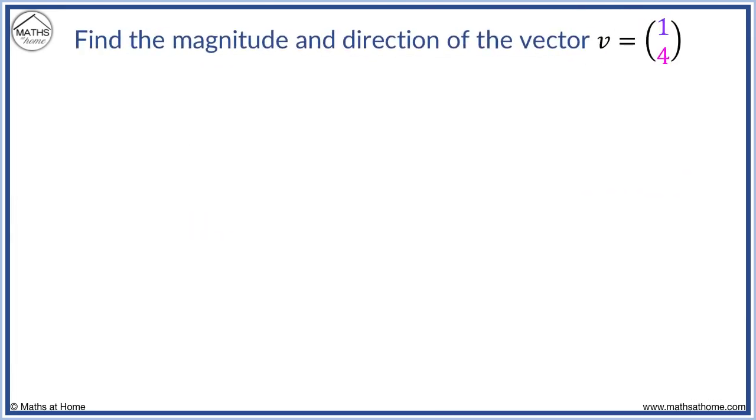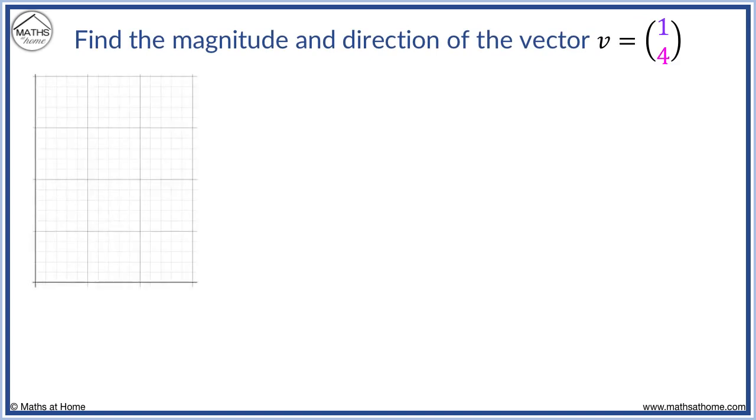For example, find the magnitude and direction of the vector (1, 4). It is shown here with an x component of 1 and a y component of 4.